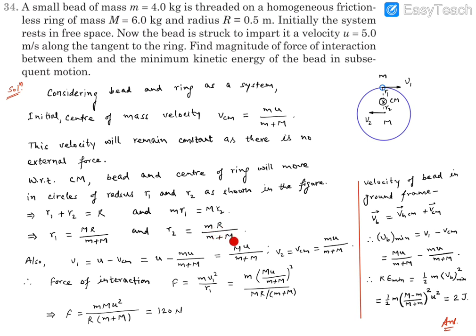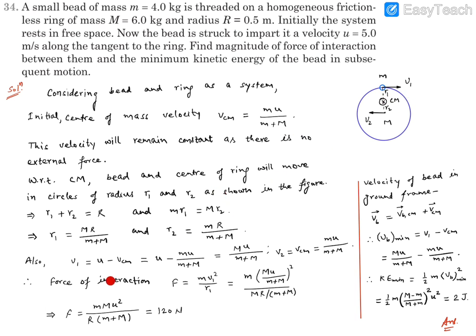Now for the velocities with respect to the center of mass: v1 = u − vcm = Mu / (m + M), and v2 = vcm = mu / (m + M). So we now know r1, r2, v1, and v2, all with respect to the center of mass frame.